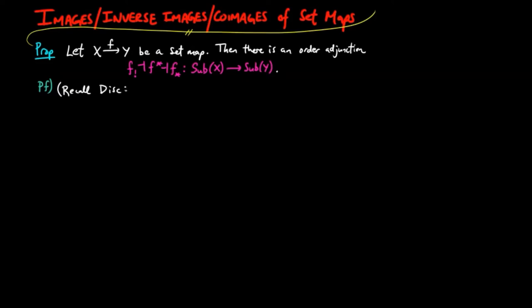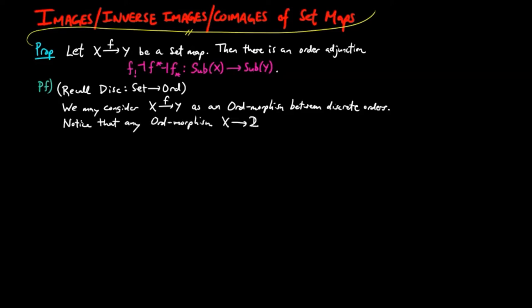For the proof, recall that there is a functor from the category of sets to the category of orders taking a set to a discrete order. Then we may consider f as an order morphism between discrete orders. Also notice that any order morphism from x to the order 2 factors through the discrete order on two elements. Therefore, the set of down-directed sets on x is a set of characteristic maps for a set x, since x is discrete, and similarly for y.